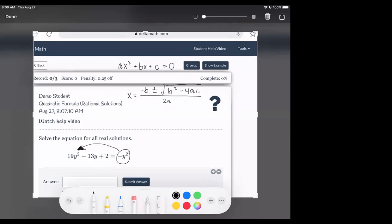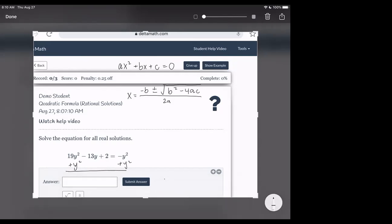So in order to move the negative y squared to the other side, what we want to do is add y squared to both sides. I'm going to write it to the side here.